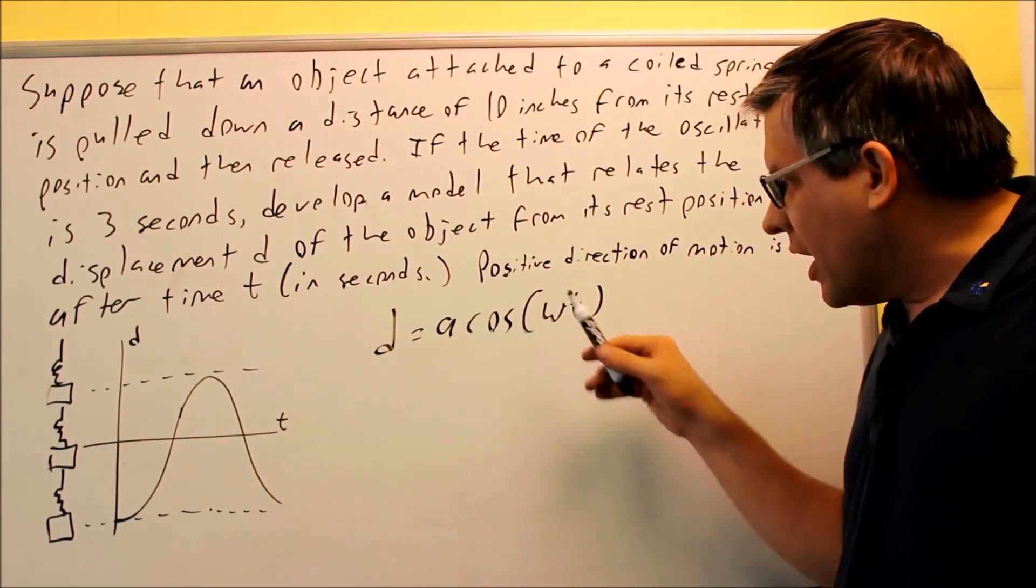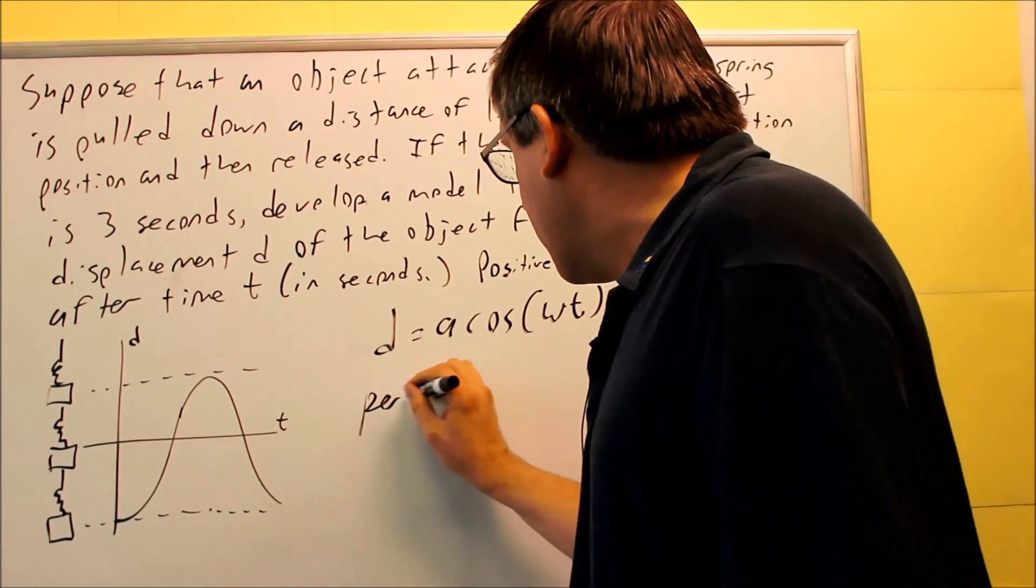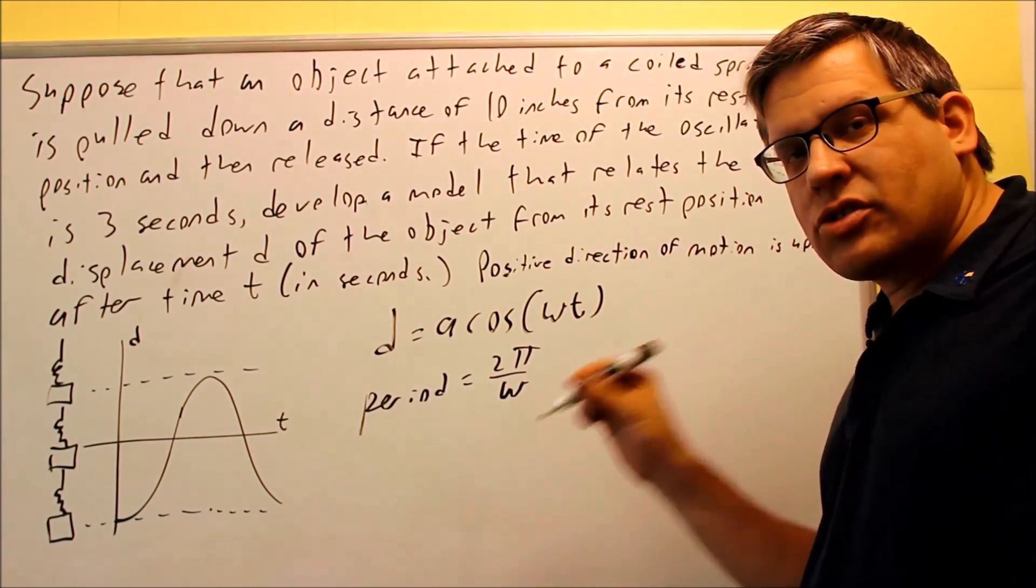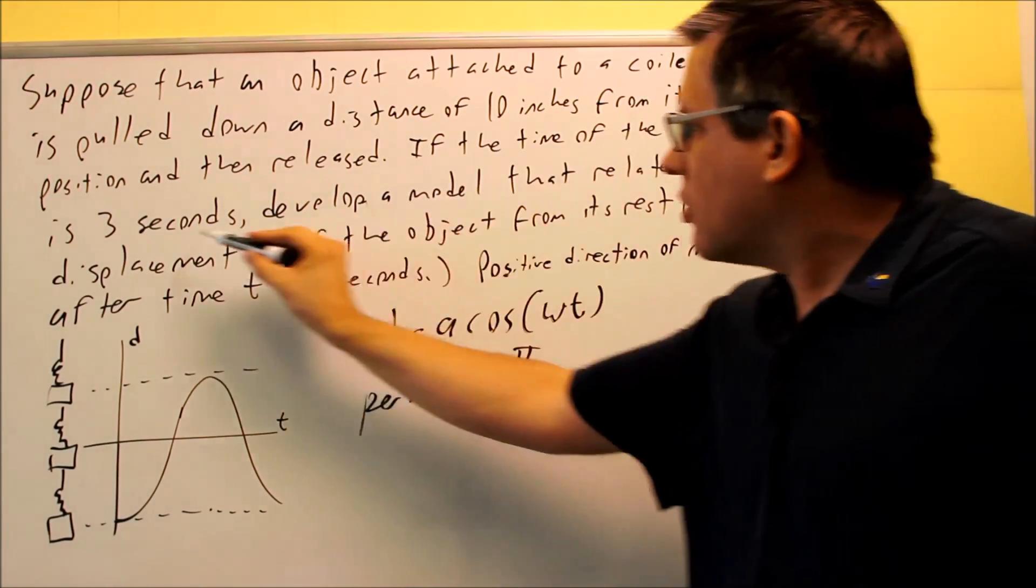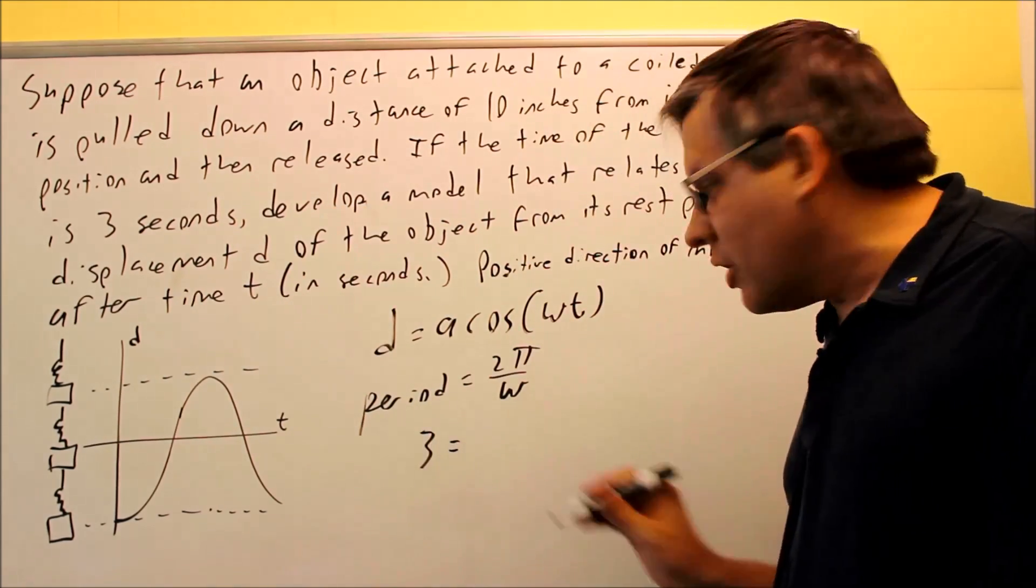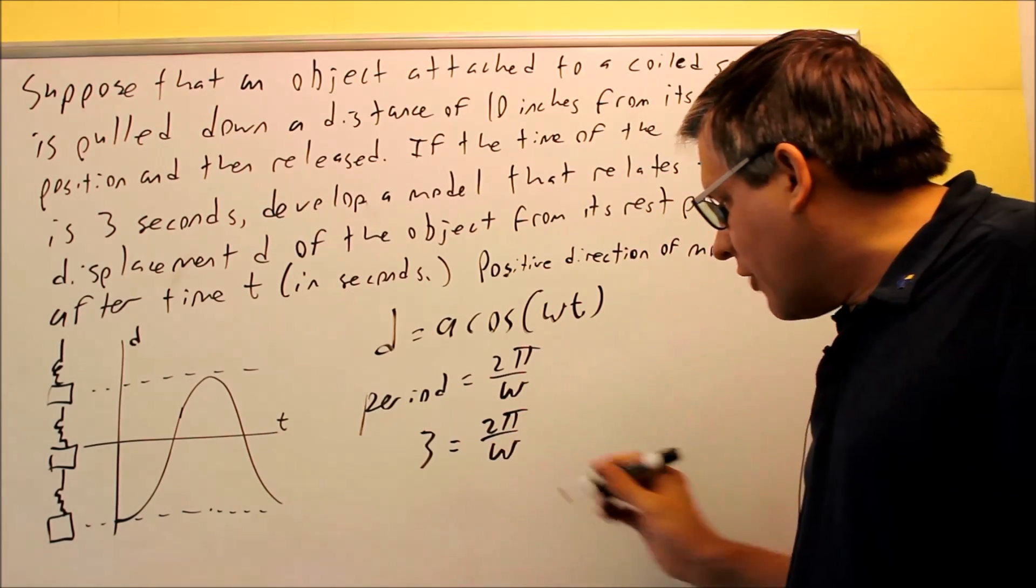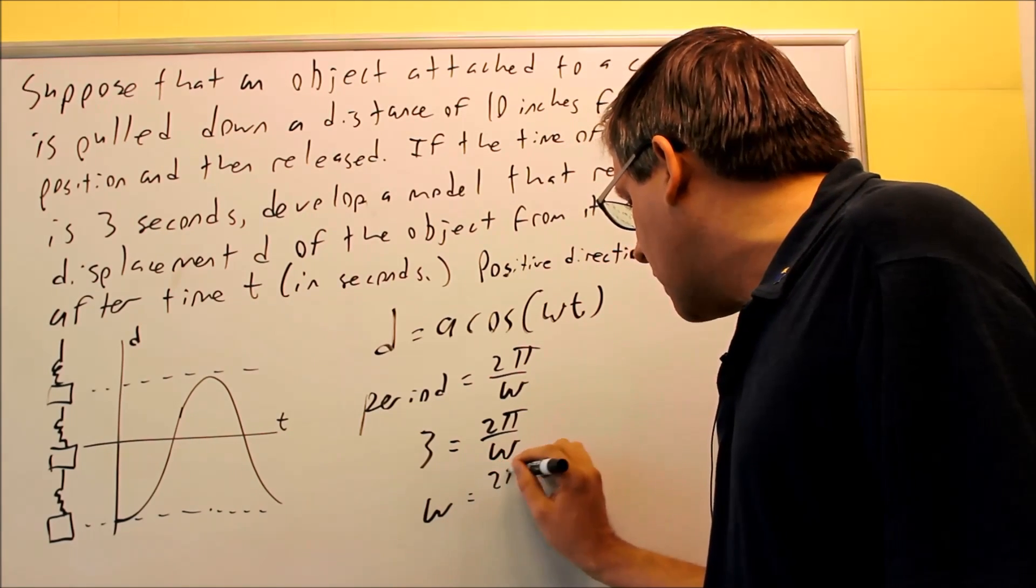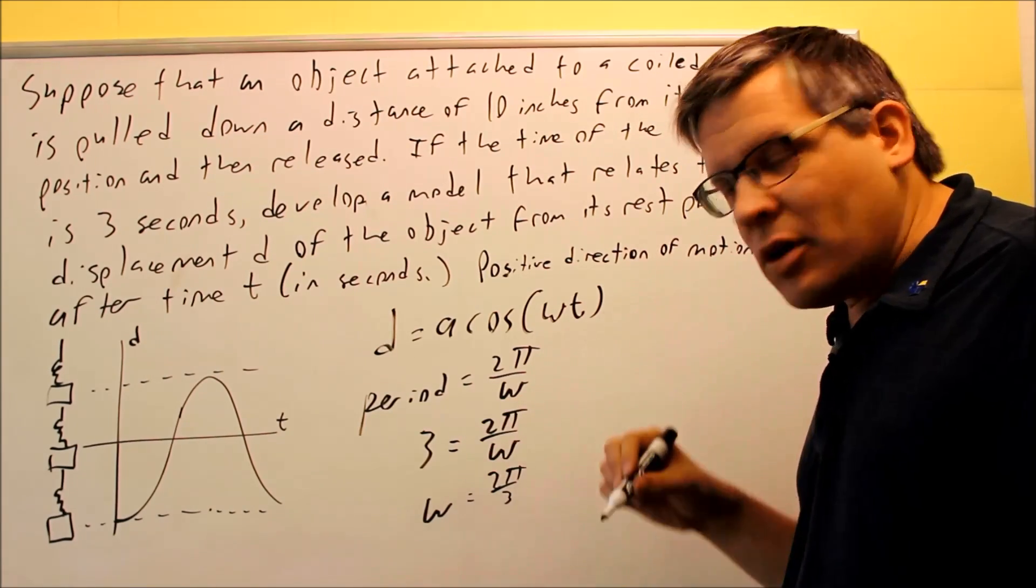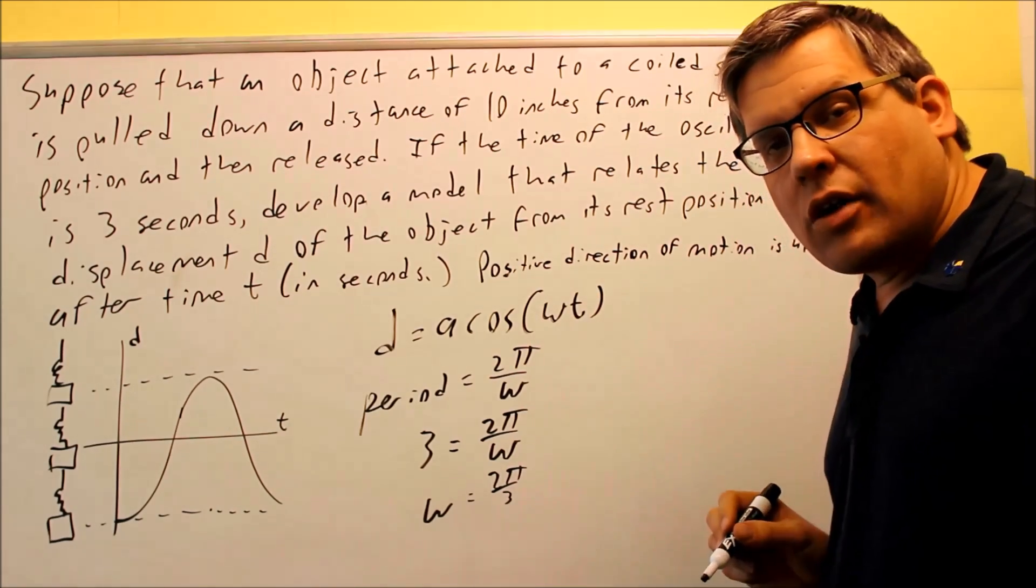The omega, we can actually figure out, let's do that one first. The formula for it is period equals 2π over omega. Now they actually tell us the period here. They tell us that the time of oscillation is 3 seconds. That is the period. So we'll put a 3 in there for the period, and this is equal to 2π over omega. And we can solve that, and if you solve all that, you get omega equals 2π over 3 by cross-multiplying, or multiply both sides by omega, divide by 3. So now I already know one piece of my formula. I know omega is going to be 2π over 3.